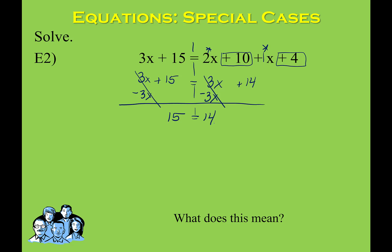Hopefully you're scratching your head a little bit — does 15 equal 14? No, that's false. Unlike the last problem where we ended up with a statement that was always true, here we have a situation where the statement is false: 14 does not equal 15. Because the statement is false and the variables have disappeared, that means the solution is no solution — there is no number you can substitute into the equation that will make the left side and the right side equal.